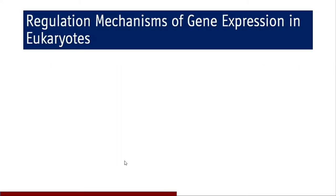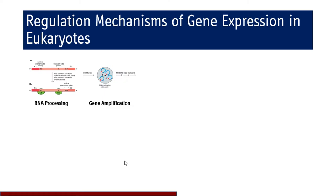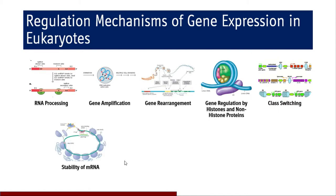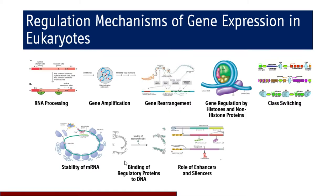Coming to different regulatory mechanisms of gene expression in eukaryotes: these include RNA processing, gene amplification, gene rearrangement, gene regulation by histones and non-histone proteins, and a mechanism of class switching. The stability of mRNA is also important so that it is available for translation for a longer time. There is also binding of regulatory proteins to DNA, and the role of enhancers, silencers, locus control regions, and insulators in regulation of gene expression.